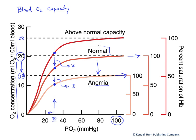We can also go in the other direction. We could increase the expression of hemoglobin and/or red blood cells in response to the hormone erythropoietin, for instance. That would increase the number of binding sites per unit blood volume — we're now up to 28 from our original 20.